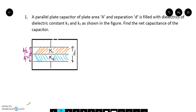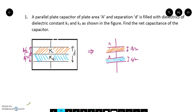You have to find the net capacitance. We can assume this as two capacitors connected in series. One has a dielectric with dielectric constant K1 and the other has a dielectric with dielectric constant K2. Like this — I have broken this into two capacitors.